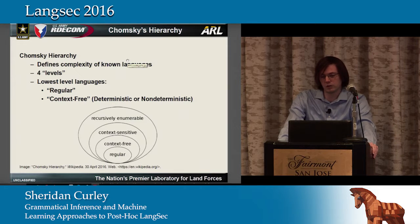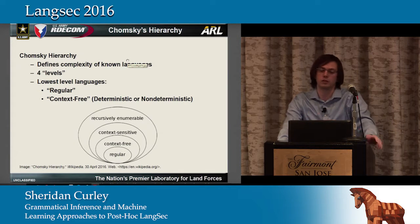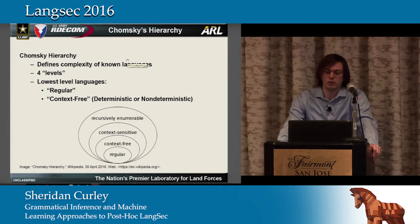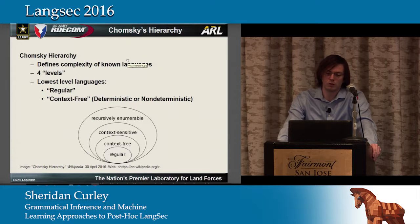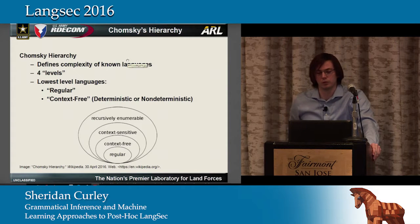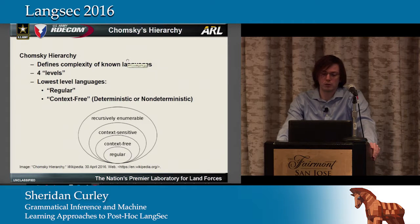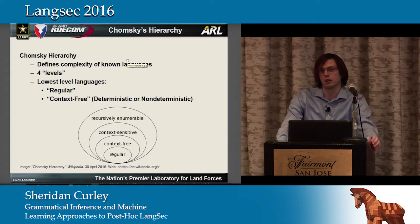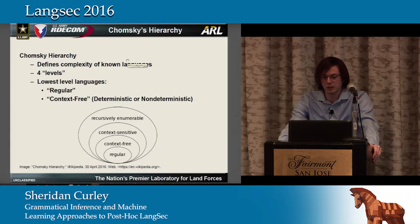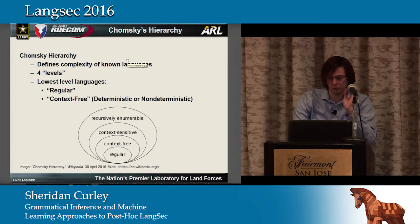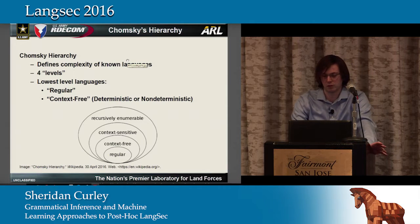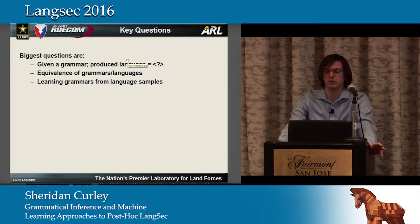When we define these languages, it ties into the Chomsky Hierarchy and its levels of complexity. The two levels we're most interested in, both from a LangSec standpoint and in general, are regular and context-free. Within context-free, we can consider either deterministic or non-deterministic grammars. We're particularly interested in pursuing context-free, because that's what we often see in practice.